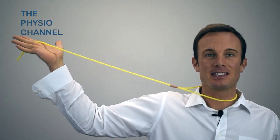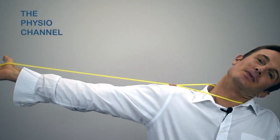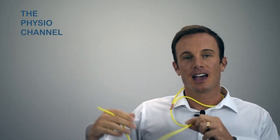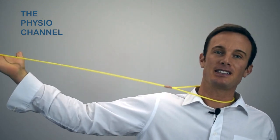A tensioner aims to increase the distance between the nerve origin and the nerve destination and places the nerve under tension. If the nerve begins to stretch it will start to produce symptoms and that's why this technique is called a tensioner and not a stretcher.